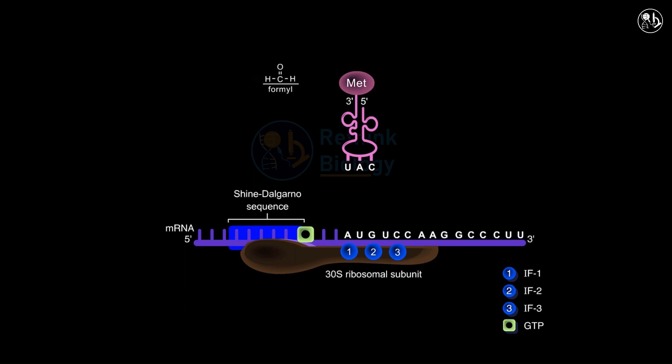This modification adds a formyl group to the methionine, making it formyl methionine or fMet. The anticodon of this initiator tRNA containing fMet pairs with AUG.